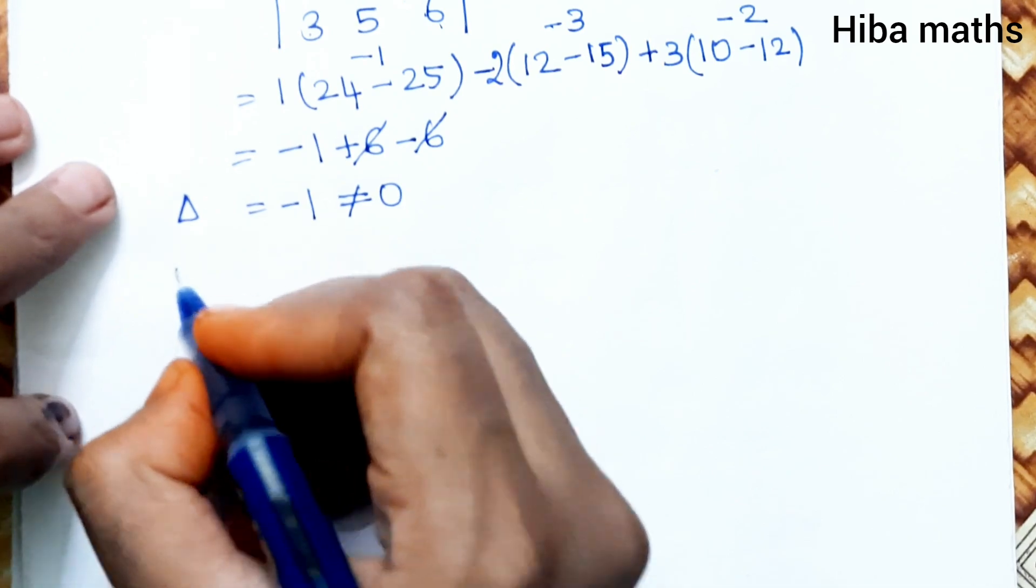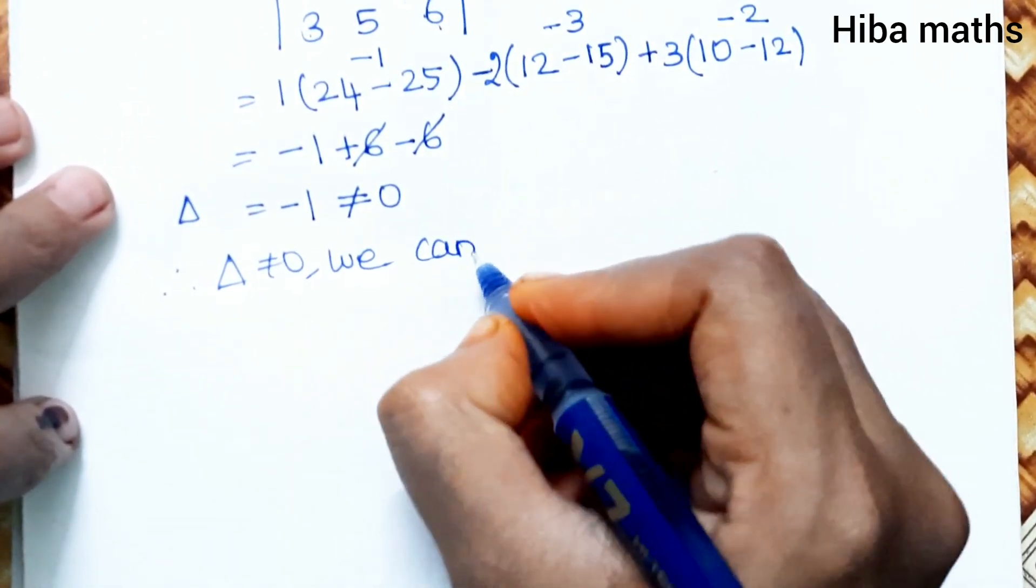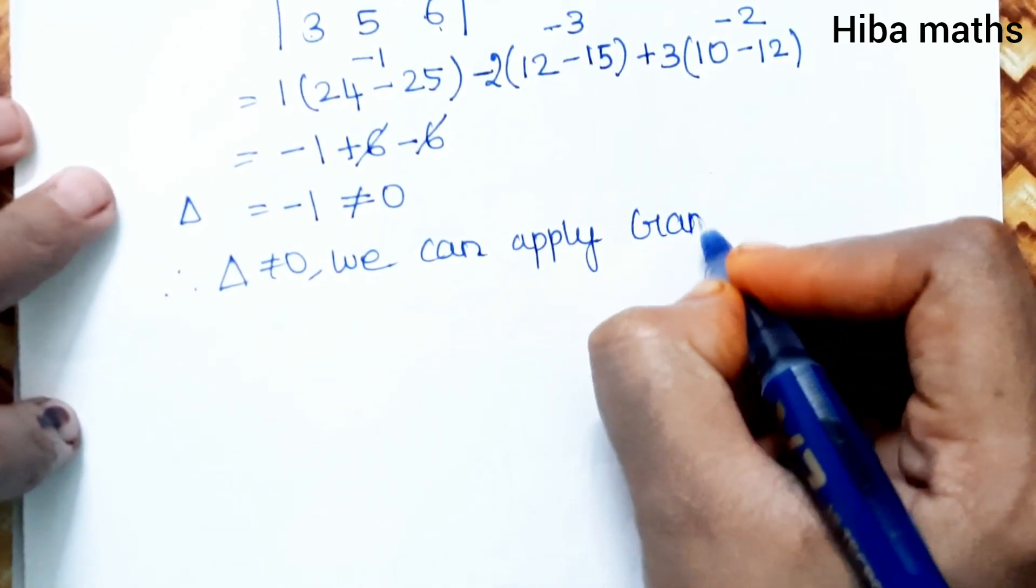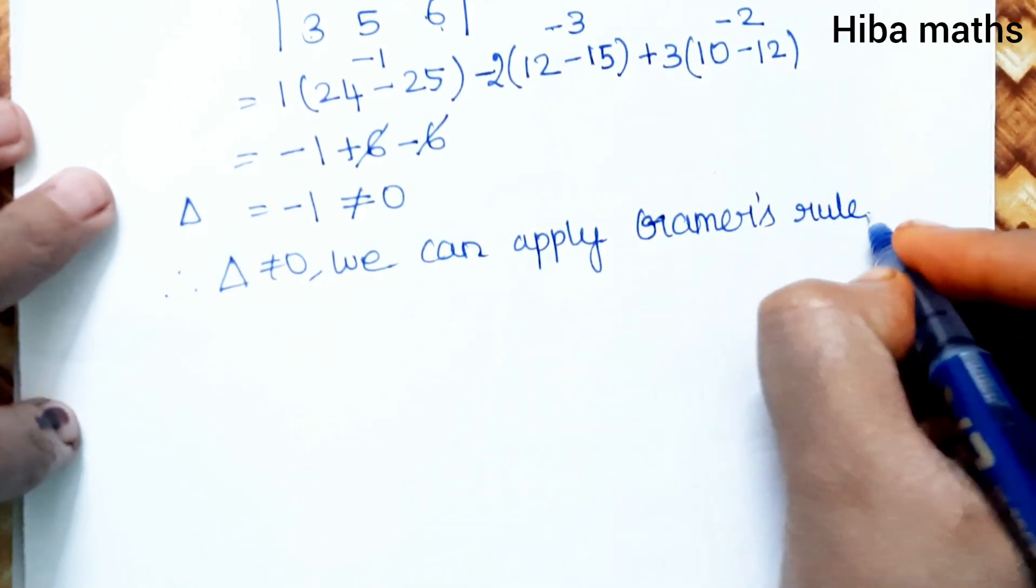Therefore, del is not equal to 0. We can apply Cramer's rule.